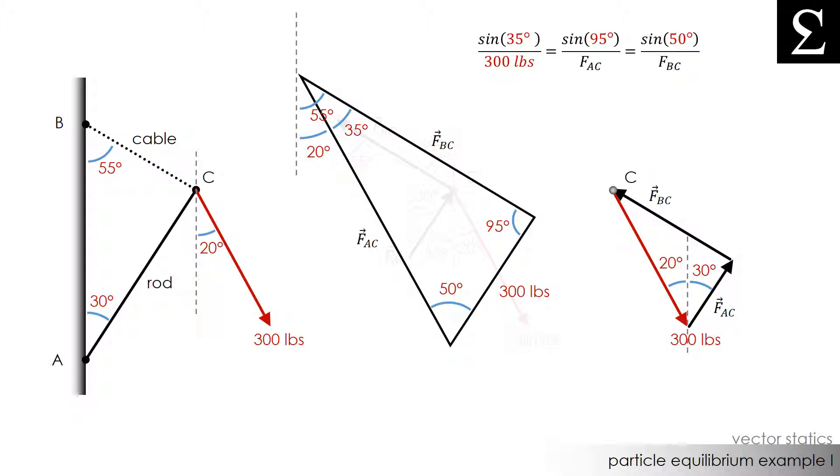Calculating this we determine that the force in rod AC is 172.7 pounds and the force in the cable BC is 230.7 pounds.